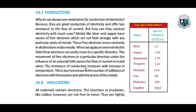The resistance of conductors increases with increase in temperature. This is due to the increase in the number of collisions of electrons with themselves and with the atoms of the metals. Here we have this table showing metals and their specific resistance.